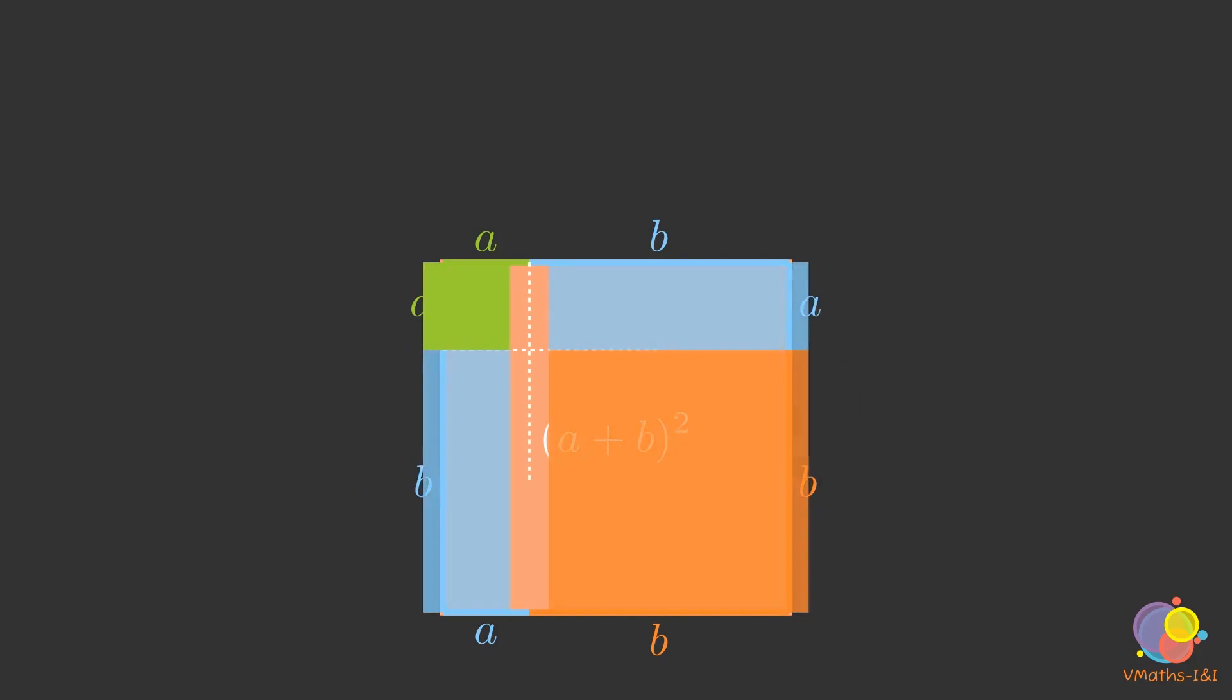And then, divide the original square as follows. The original square is divided into four shapes.